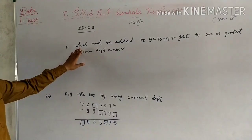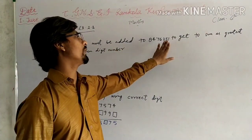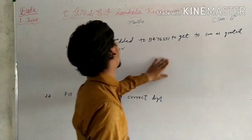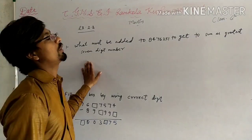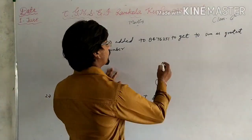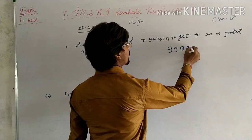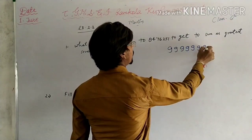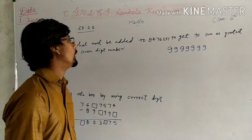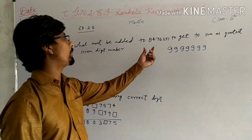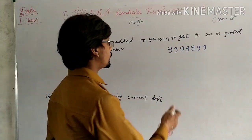Your question is: what must be added to 8,476,251 to get the greatest 7-digit number? First you have to know what is the greatest 7-digit number. Your greatest 7-digit number is 9,999,999. Now we have to subtract this number from this number to get the answer.